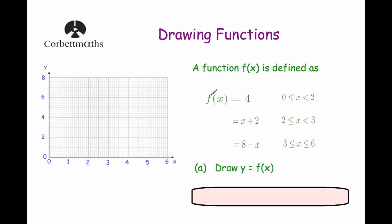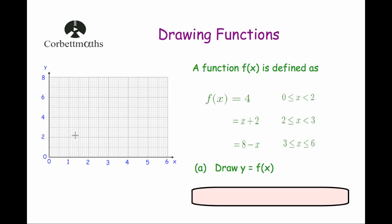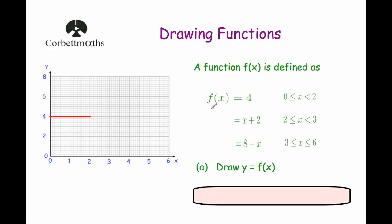Let's start off with the first piece: f of x is equal to 4. That's going to be a horizontal line going through 4, and it's for values of x bigger than or equal to 0 but less than 2 — so from 0 to 2. The function is equal to 4 throughout that interval.